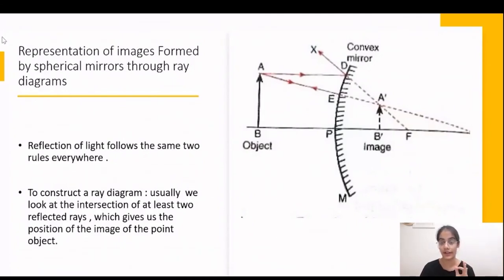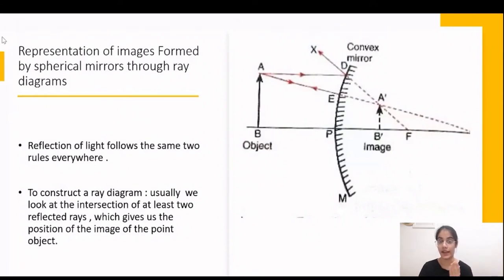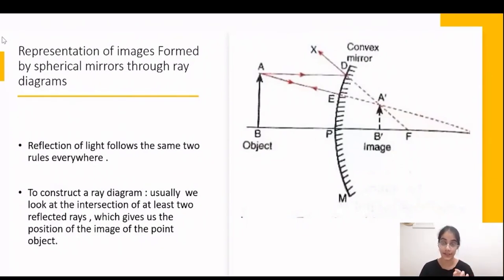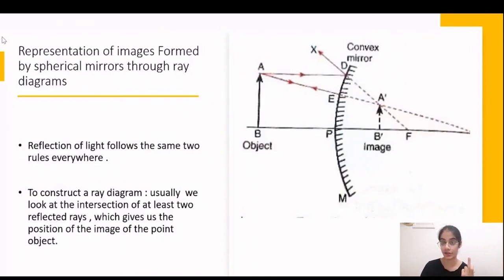Ray diagrams are called so because objects and images are represented by a straight line segment arrow, and incident and reflected light are also represented by rays. The object is represented by an arrow on the principal axis — in the diagram, object AB is shown with the arrow pointing upwards, meaning the image is not inverted but erect.